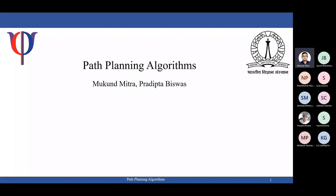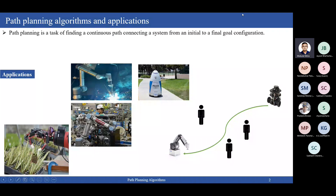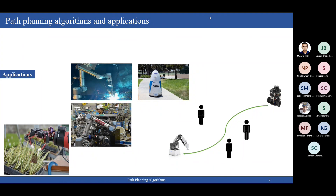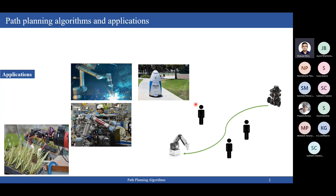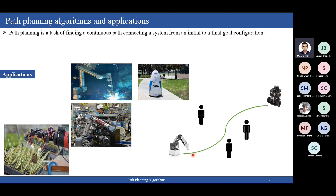We will discuss path planning algorithms. So what is path planning? Suppose this is a robot and this is a manipulator, and the robot needs to go to this manipulator while avoiding static and dynamic obstacles like humans. The path it generates to go from one place to another is basically the overall picture of path planning. Path planning is the task of finding a continuous path between an initial position and the goal position, and it is very important that the path should be continuous.